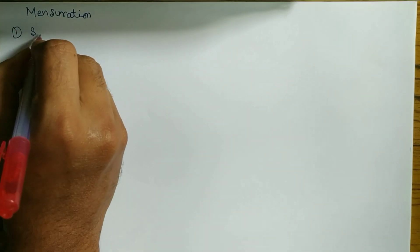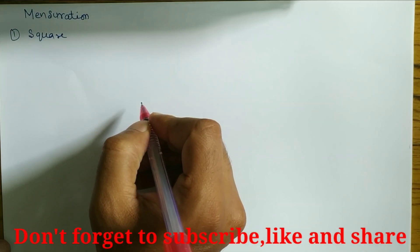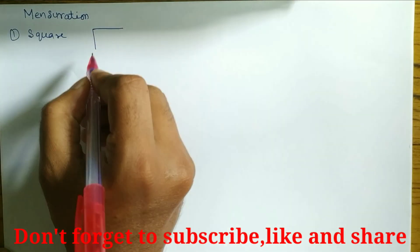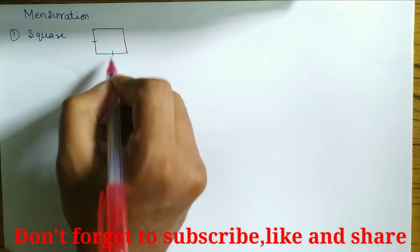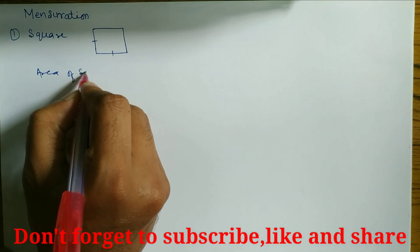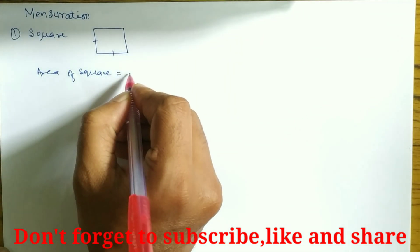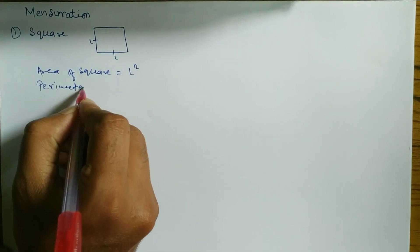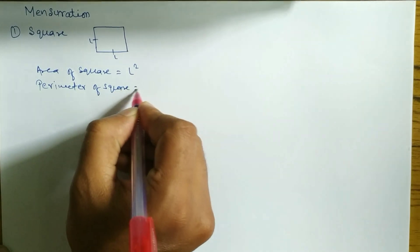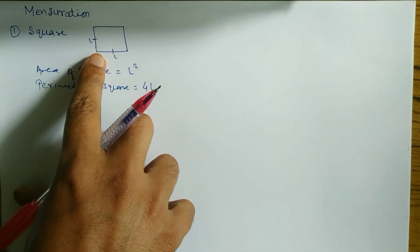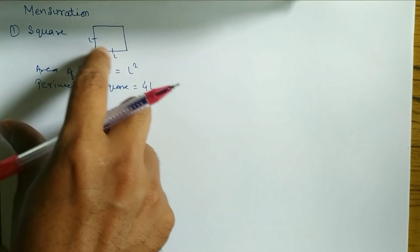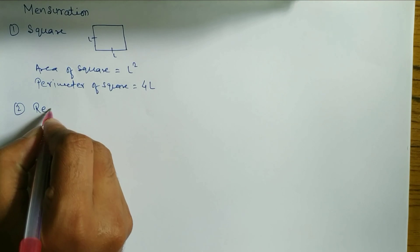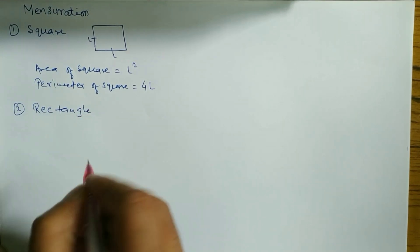Question number one: I am going to provide you the formula of a square. First of all understand what is a square — a square means all sides are equal. By showing a diagram you can see all sides are equal. Area of a square formula is L squared. Perimeter of a square formula is 4L, since all sides are equal — L, L, L, L.